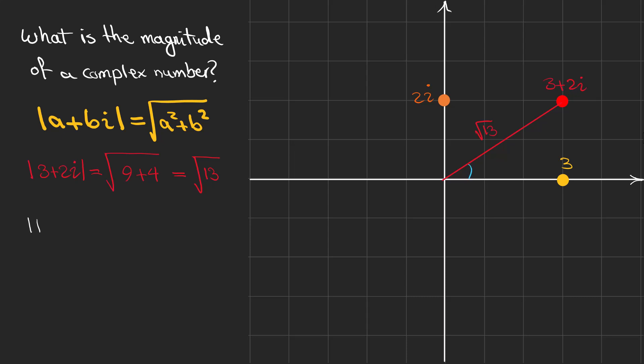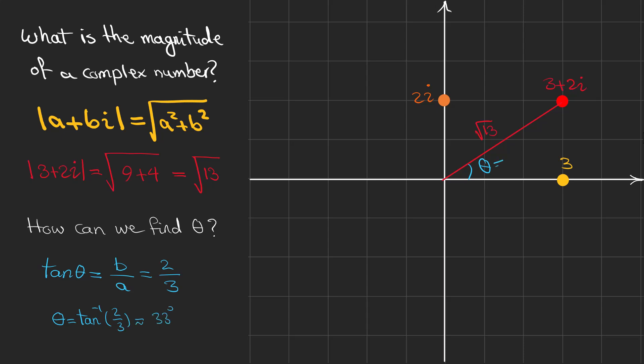The magnitude is the square root of 13. Now think about how we can calculate the angle between the direction of our complex number and the x-axis, which is the real axis. We can use the definition of tangent of theta, which is B over A — the imaginary part over the real part. In this example, 3 plus 2i, it is 2 over 3. To find theta we use the inverse tangent, and the answer is 33 degrees.